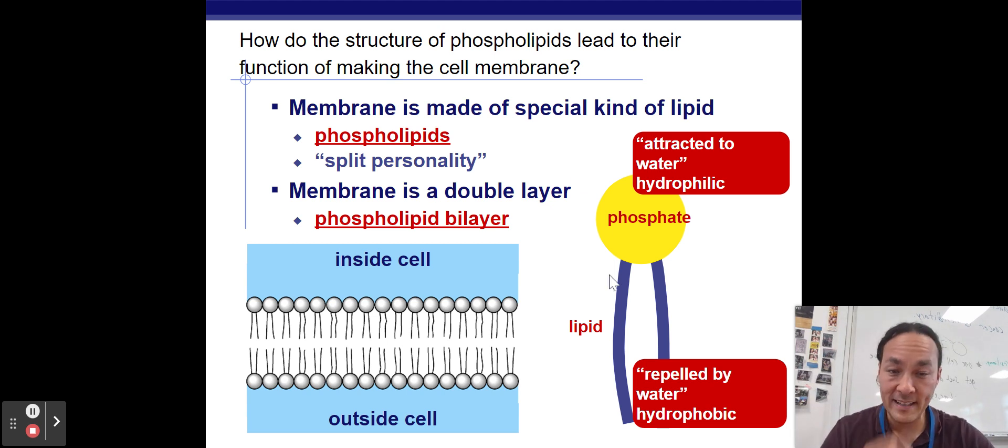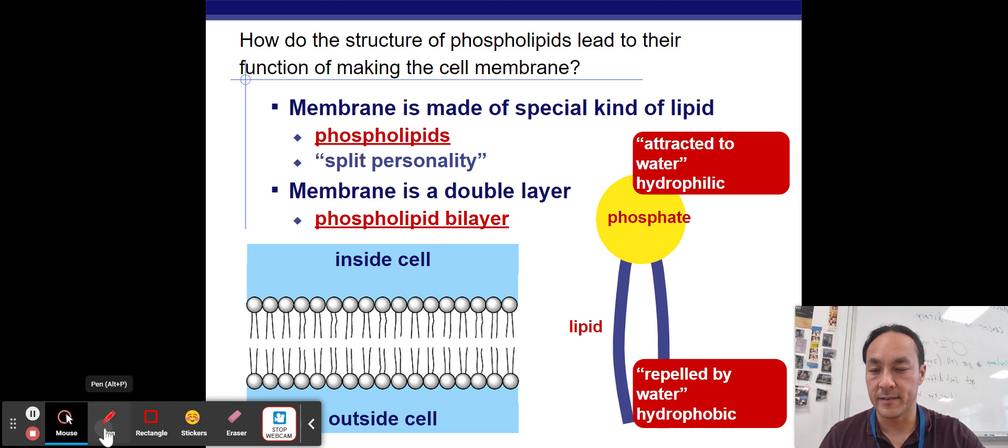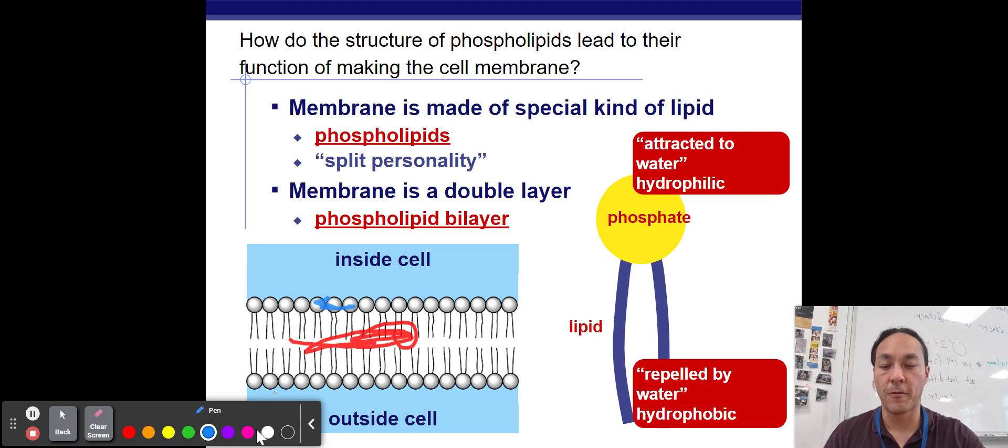Now, the fatty acid tails are repelled by water and are hydrophobic. Those are nonpolar molecules. They do not like water. They will bunch up together to form this nonpolar inside of the cell membrane. So this would be nonpolar in here, out here enjoys water. And so that forms energetically favorably.